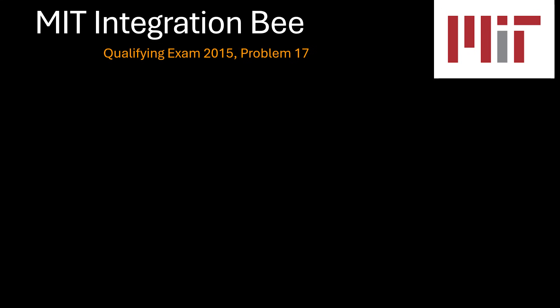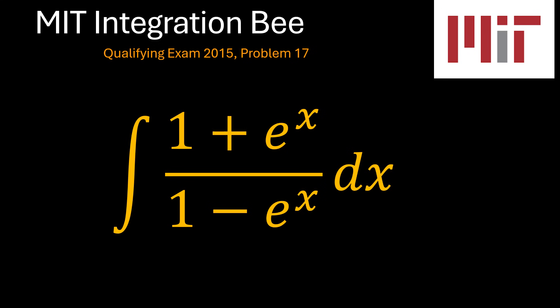So, problem number 17 of the MIT Integration Bee qualifying exam of 2015, which is an indefinite integral of 1 plus e to the power x all over 1 minus e to the power x. So, this is also a fairly easy problem. Let's see how we may be able to solve it.